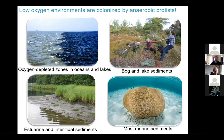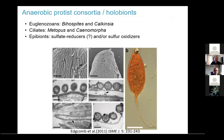One common theme among free-living protists is the ability to strike up partnerships with various other microbes such as archaea or bacteria. A common theme we often see is that these bacteria or archaea are closely associated with mitochondrial relative organelles such as hydrogenosomes. These endo- or ectosymbionts often sit in very close physical proximity to the hydrogenosomes.